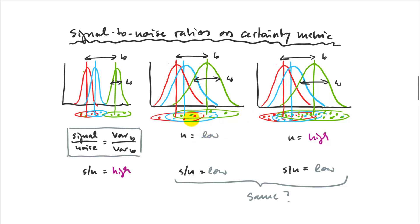Note that two of those experiments have actually the same effect size — the same between-variance and also the same within-variance. But one has a bigger sample size, and we said we're more confident in that one. So the signal-to-noise ratio calculated from the data is not the whole story. My signal-to-noise ratio based on the data is identical in both cases, but our confidence is not — so we are missing one more piece of information.